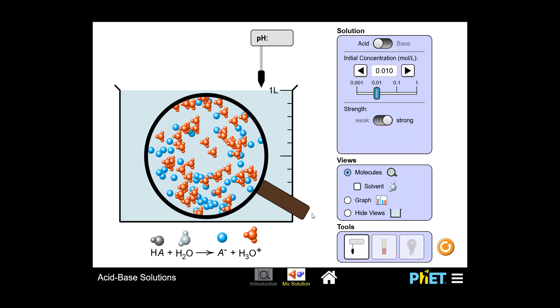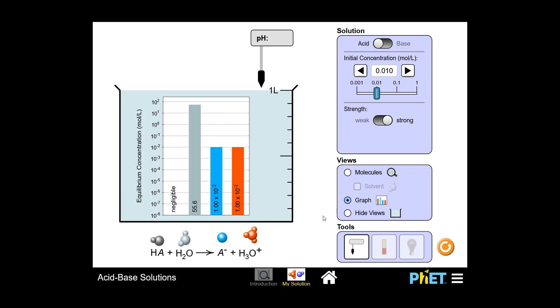In addition to the molecule view you see here, the simulation also provides you with a graph view, which you can click over here on the right-hand side. This graph shows you the equilibrium concentration of the acid solution you selected. In this case, we're looking at the equilibrium concentration graph for a strong acid. Again, you can flip between the weak and the strong acid right here on the right-hand side.